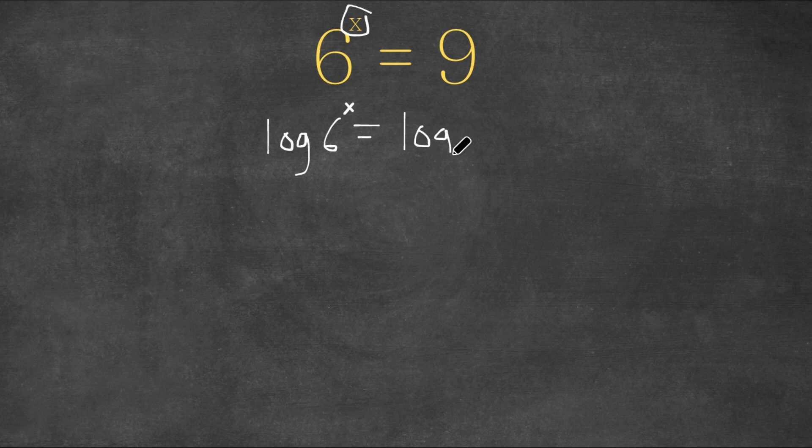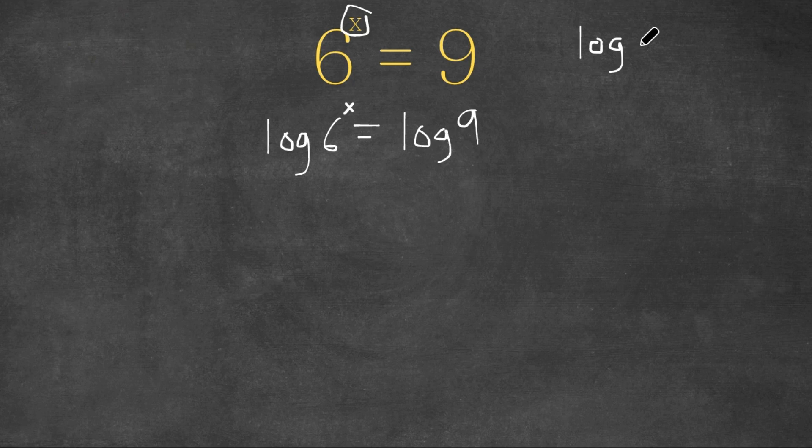to the power of x equals log times 9. An important property of logarithms is known as the power property. This states that if we have log a to the power of b, this is the same thing as b times log